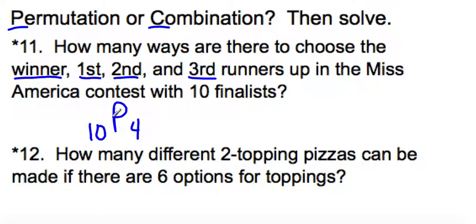So in your calculator, you're going to do 10, probability button, go get the permutation, and then 4. So there are 5,040 ways for these finalists to be chosen for those top spots.